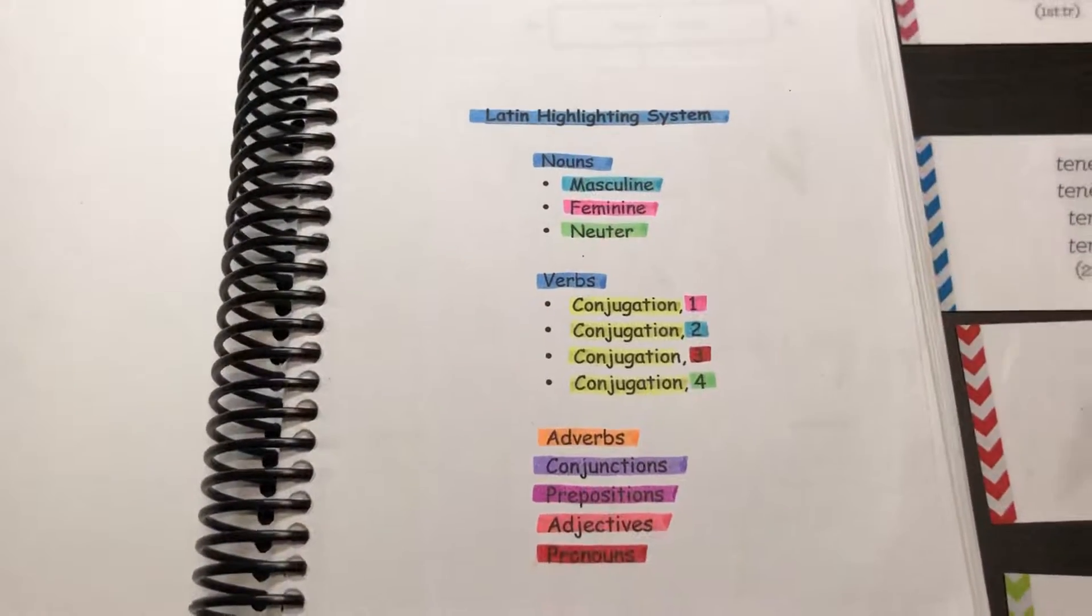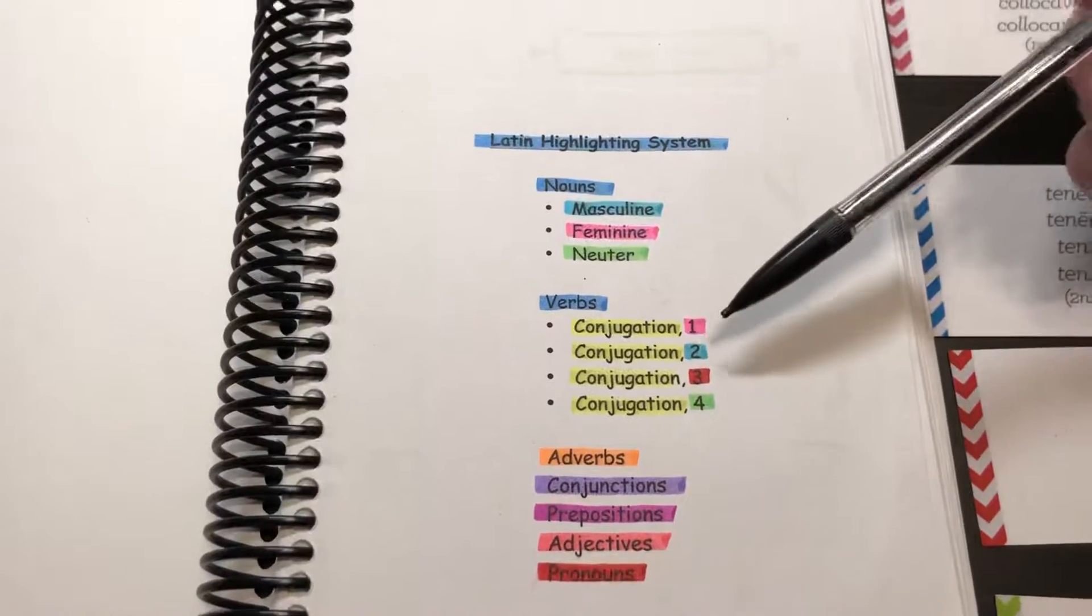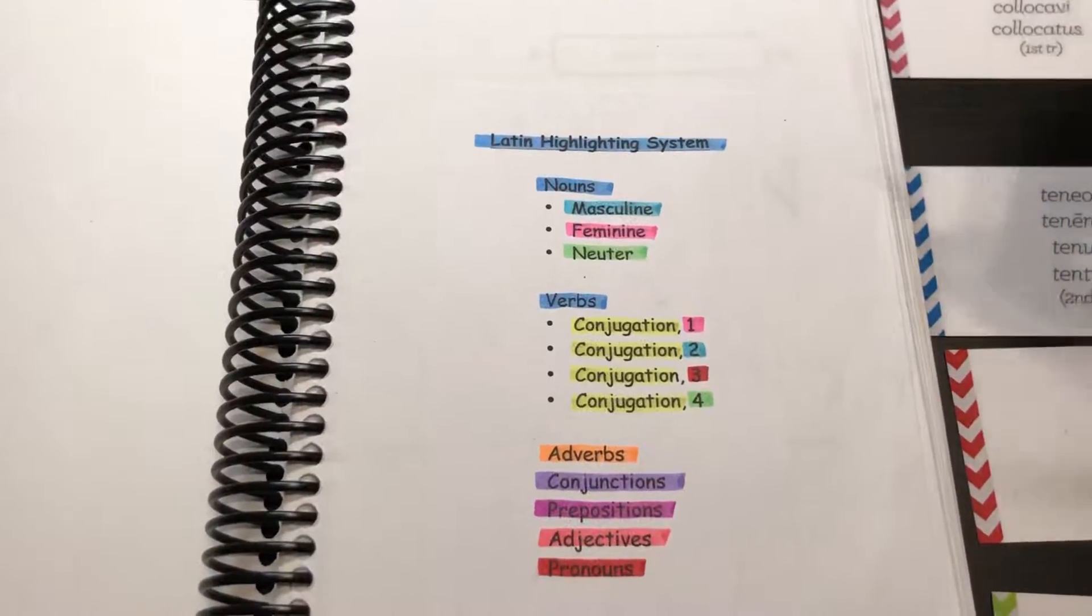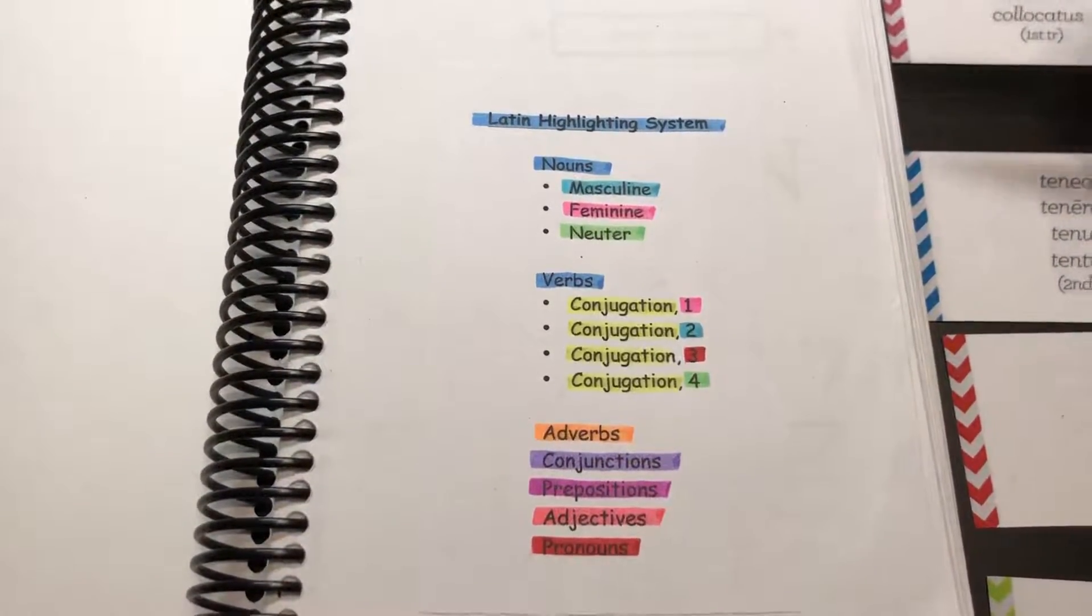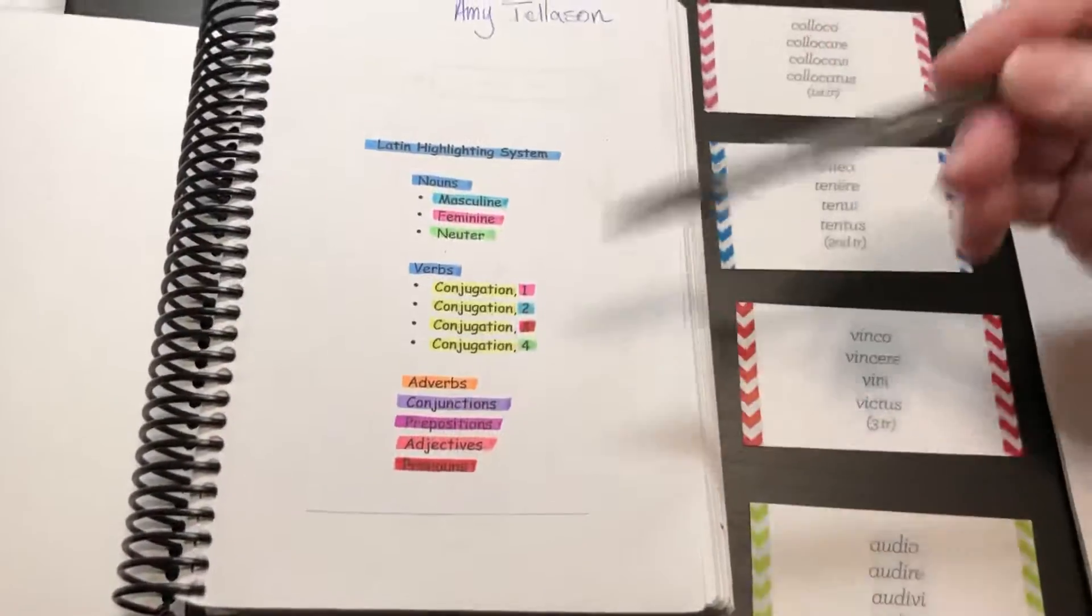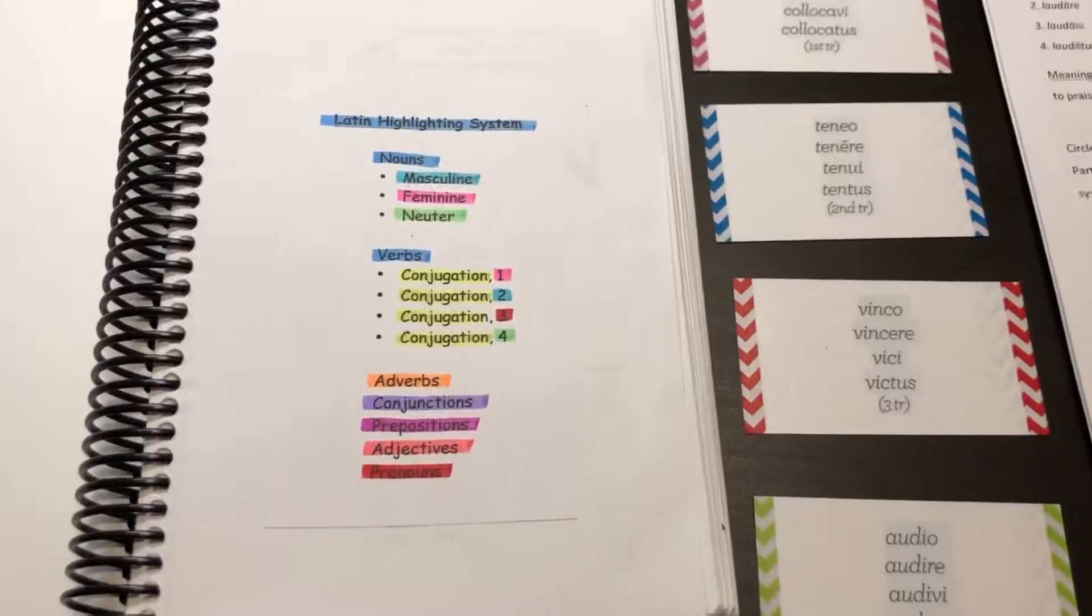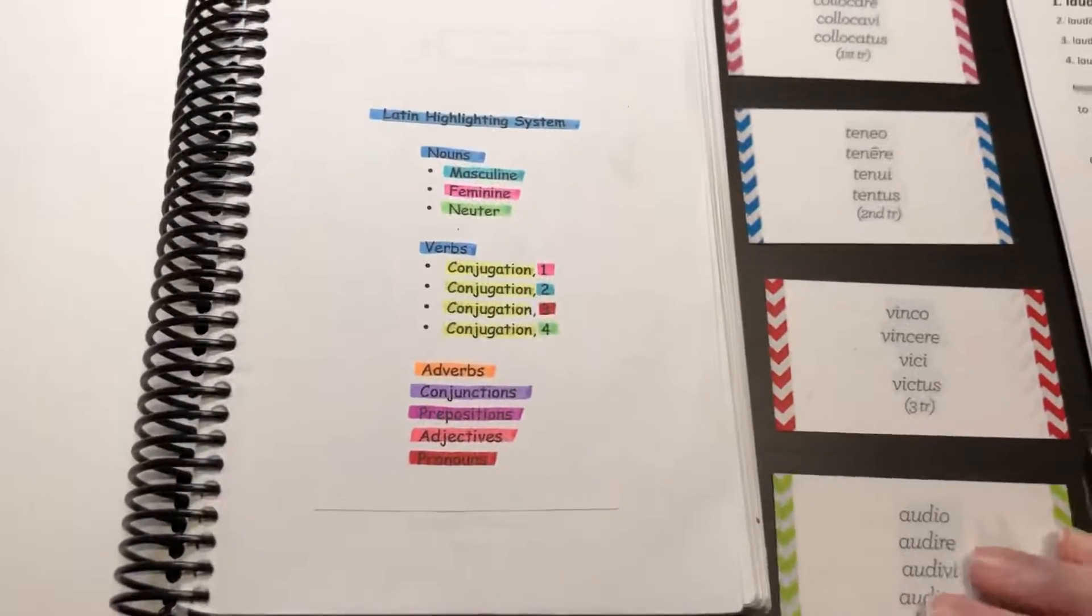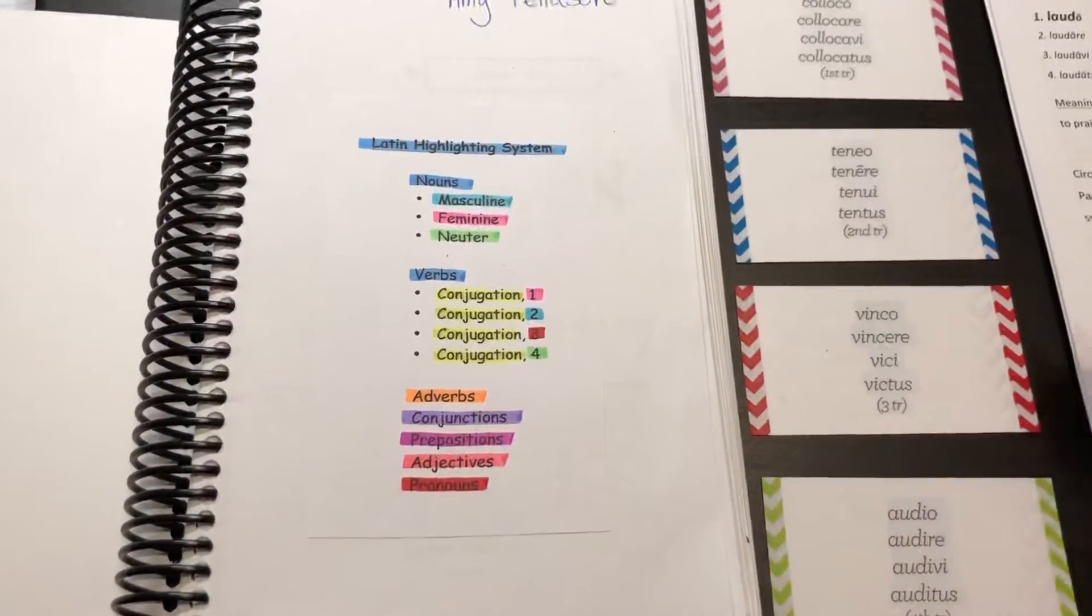It wasn't till later that I figured out there were different conjugations, and so I wanted to designate each conjugation a different color. So over time this whole system here has evolved and been tweaked a little bit.